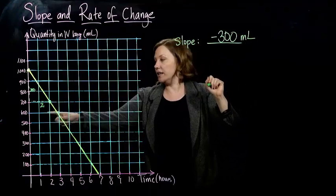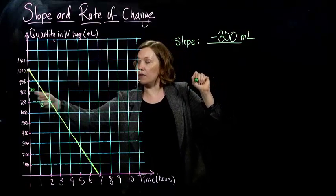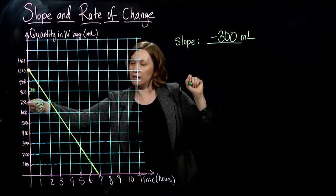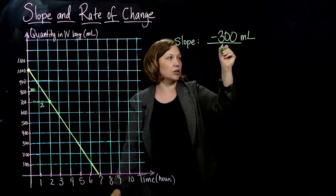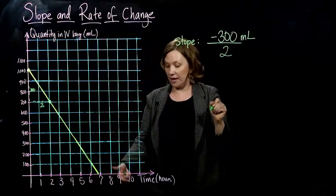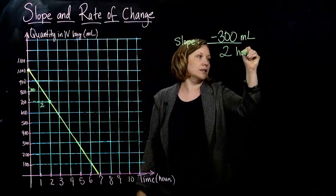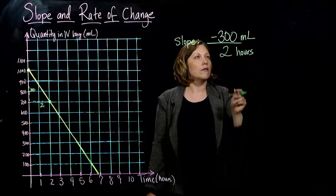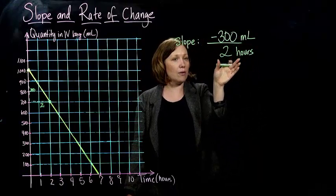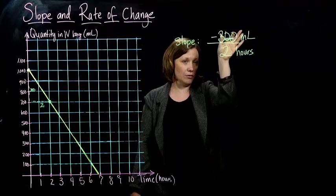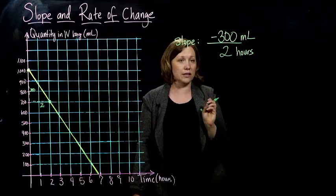And this is milliliters. And we went, if we go down 300, we went in the positive direction 2. And that is hours. Okay, so for every 2 hours we go forward, we go down 300 milliliters in our IV bag.